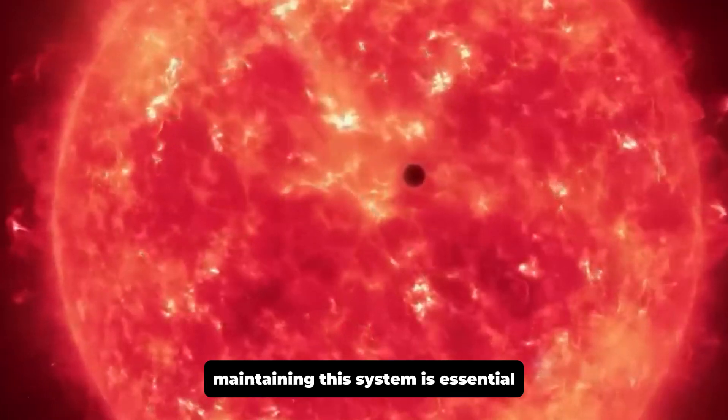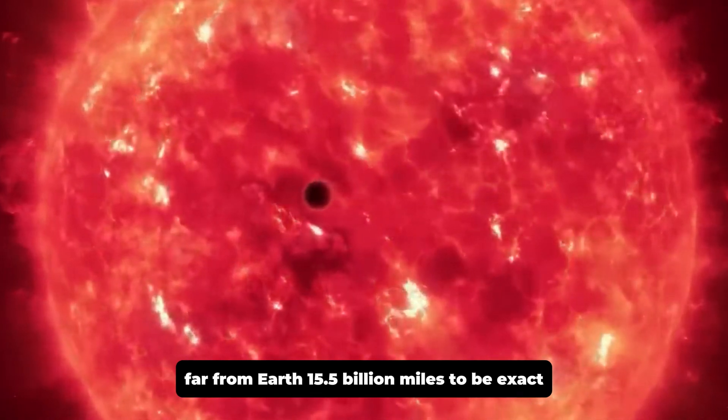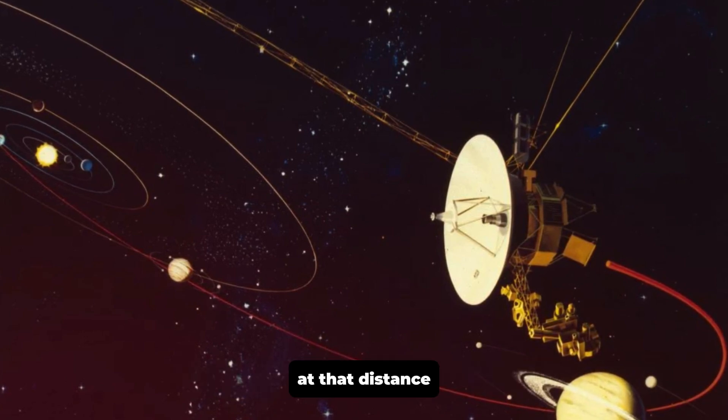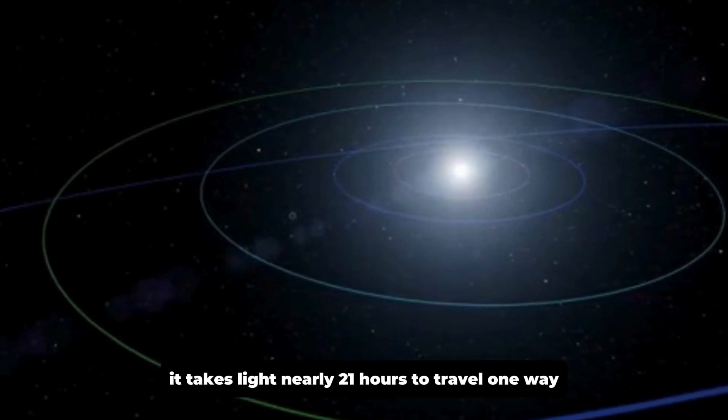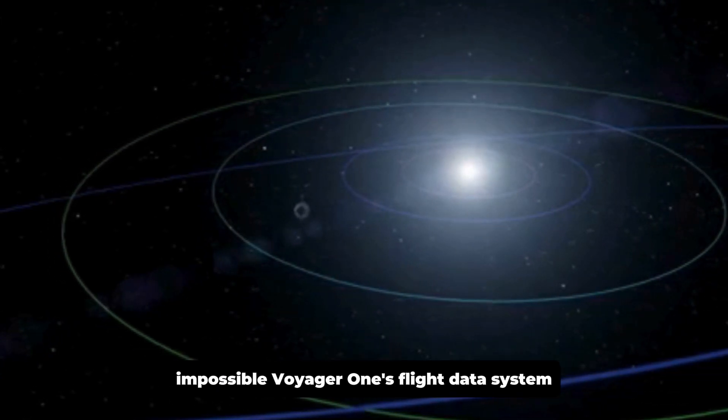Maintaining this system is essential, especially since the spacecraft operates so far from Earth, 15.5 billion miles to be exact. At that distance, it takes light nearly 21 hours to travel one way, making real-time communication and troubleshooting impossible.